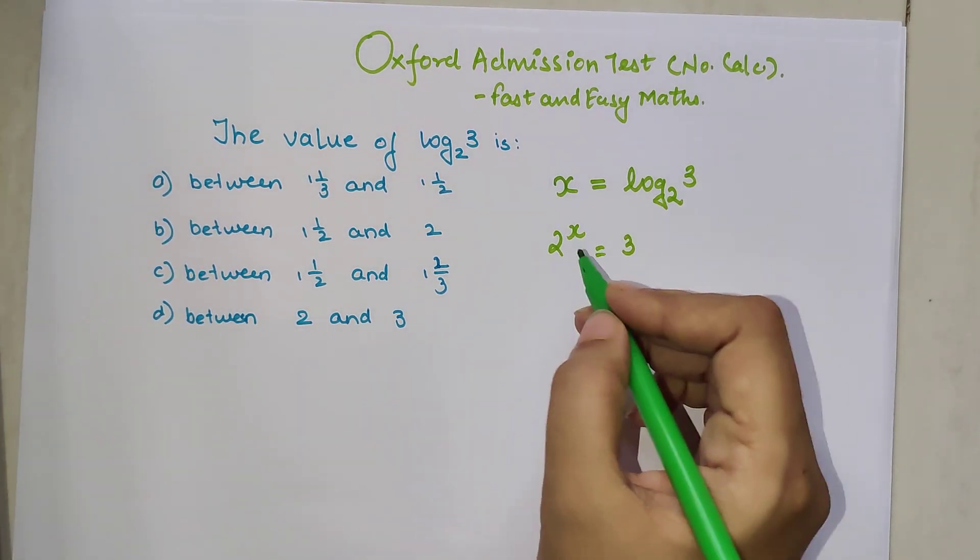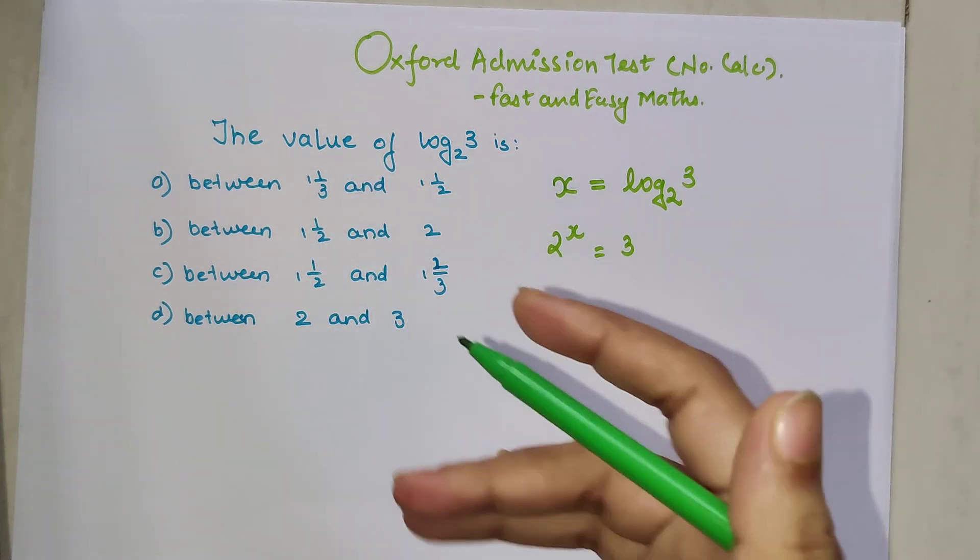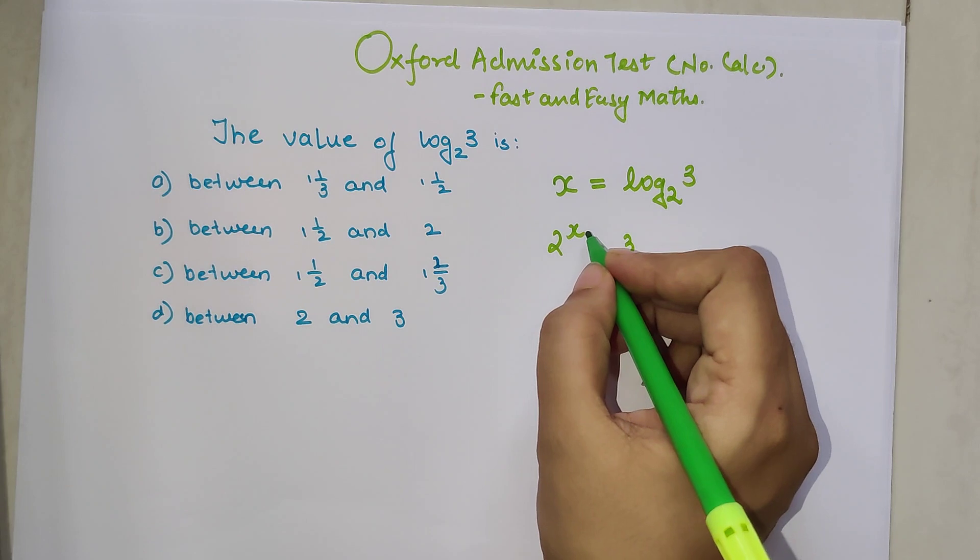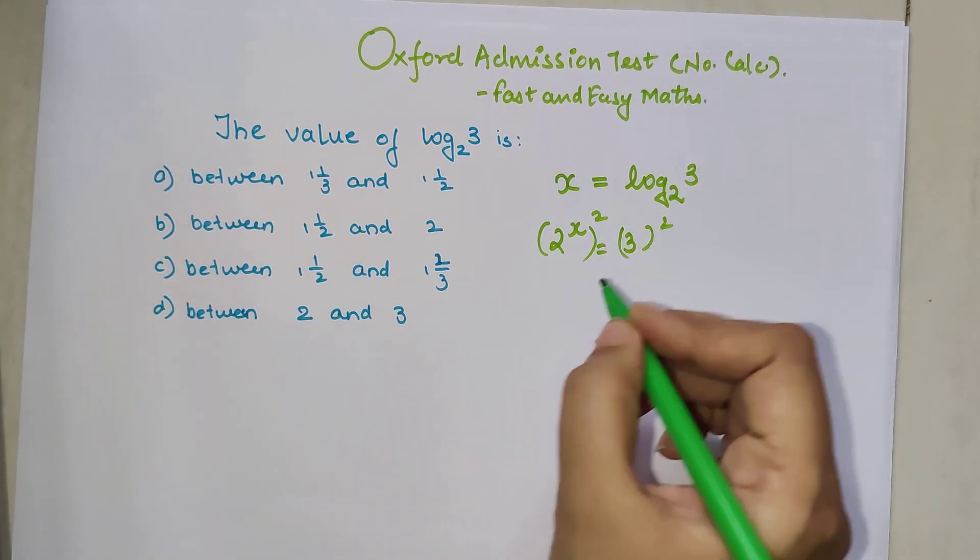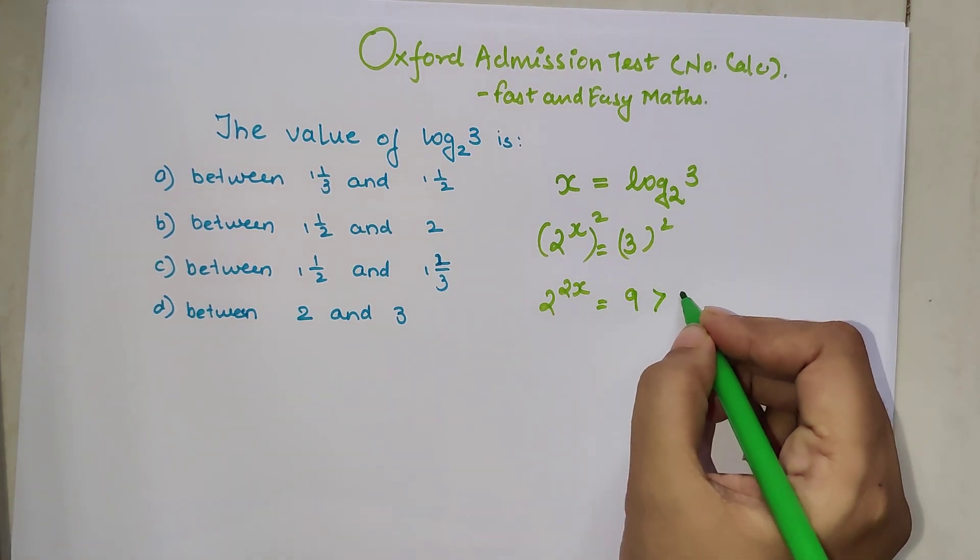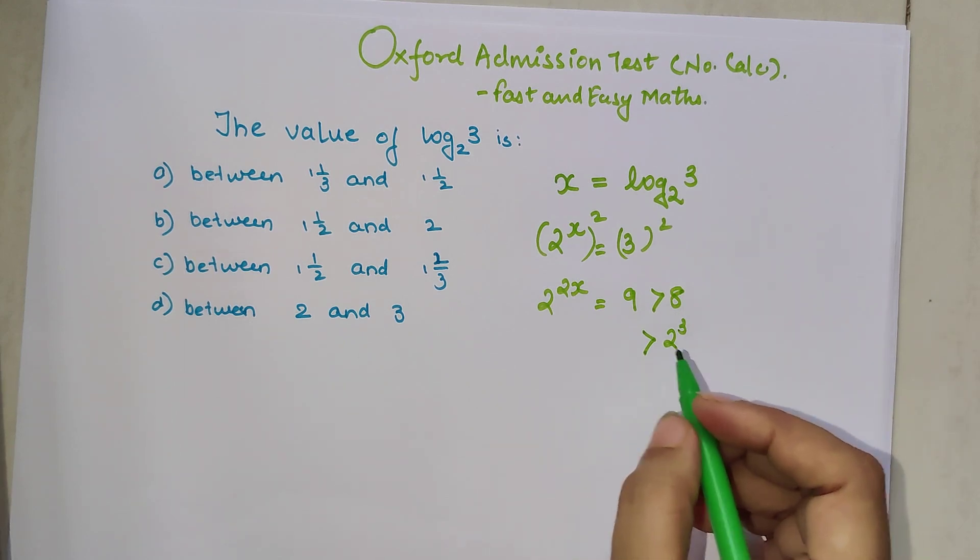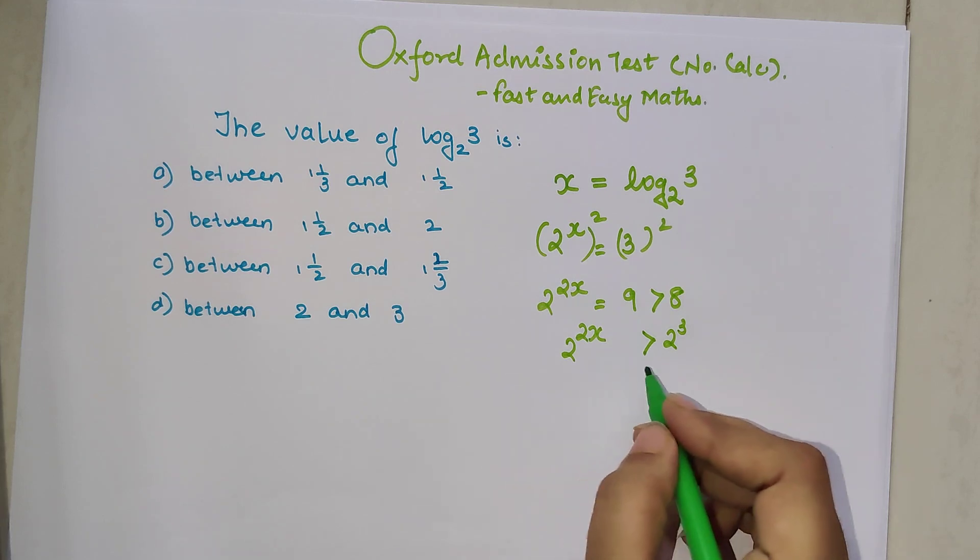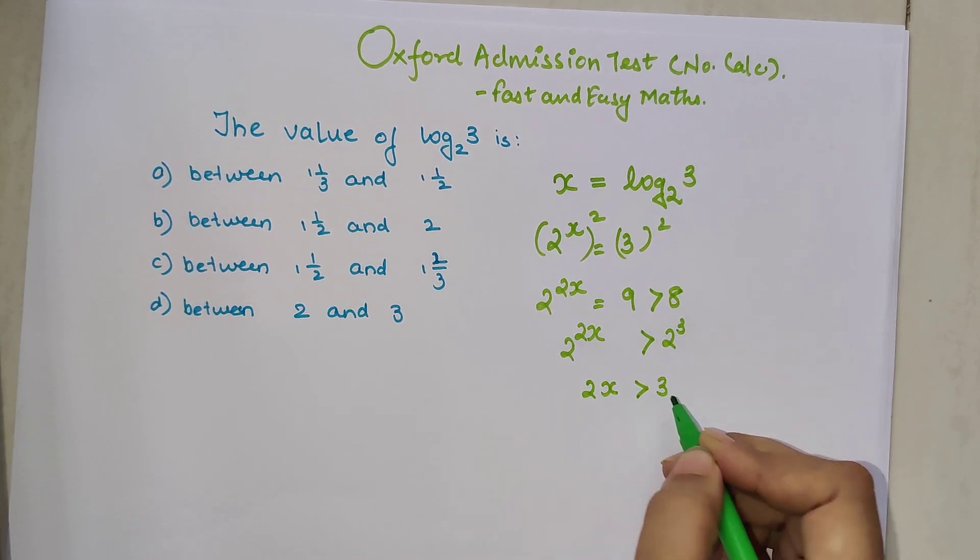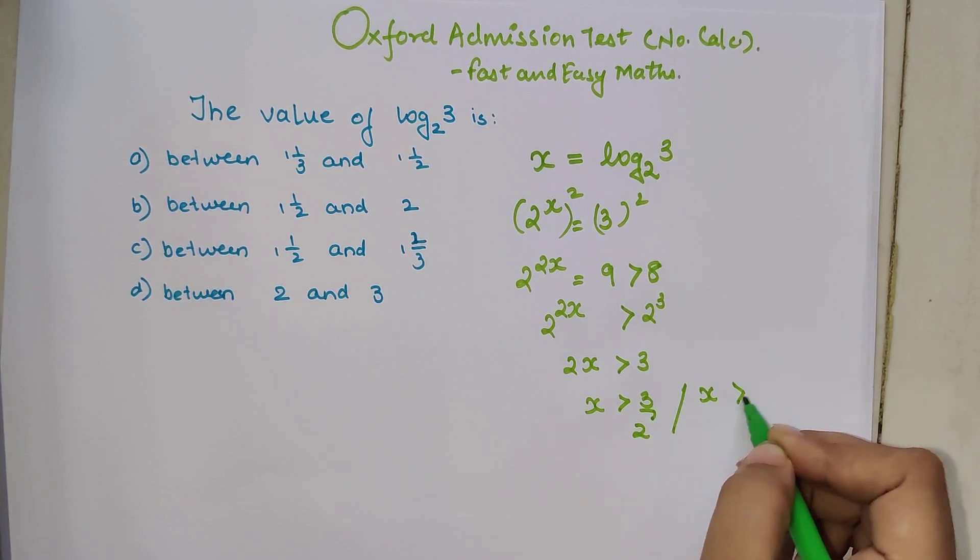So now over here, still after this, getting the value of x is not very easy. But always keep in mind, your options are in form of a range. So I don't need a particular value. I just need to find out it will be greater than or lesser than for what values. So here, let's square each of them. So I can say 2 raised to 2x equals 9. And can I say 9 is greater than 8? Yes. And 8 can be written as nothing but 2 cubed. So now we have 2 raised to 2x is greater than 2 cubed. Now since the bases are same, I can directly say that 2x is greater than 3. So x is greater than 3 by 2 or we can also say that x is greater than 1 and a half.